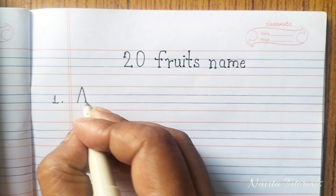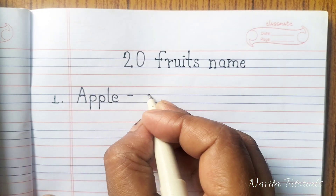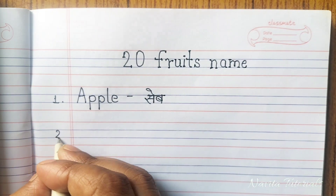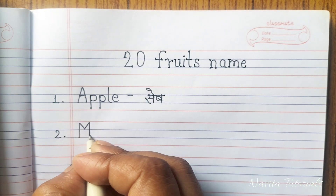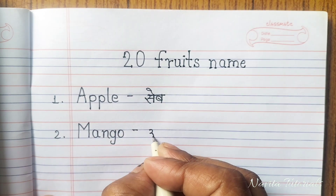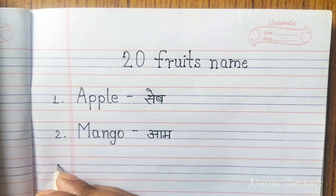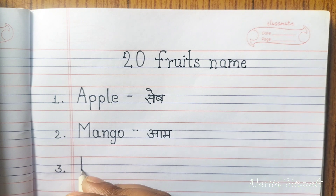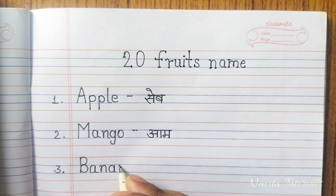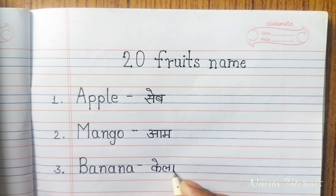First: A-P-P-L-E, Apple. Apple means Seb. Second: M-A-N-G-O, Mango. Mango means Aam. Third: B-A-N-A-N-A, Banana. Banana means Kela.